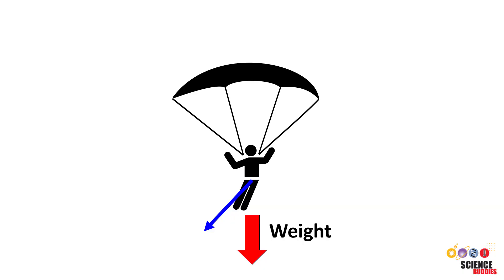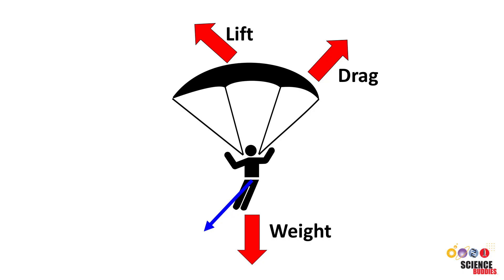It is possible for a parachute to generate lift if the person moves sideways while falling. In this case, as always, drag is opposite the direction of motion, and lift is perpendicular to it.